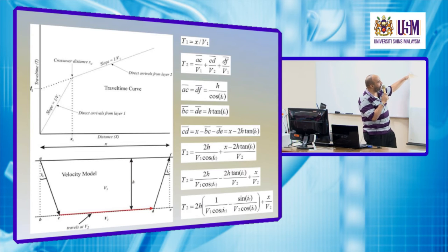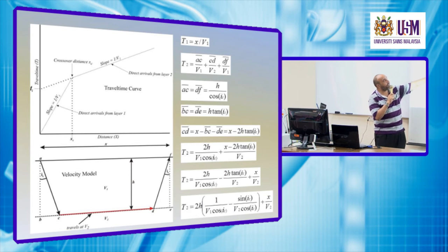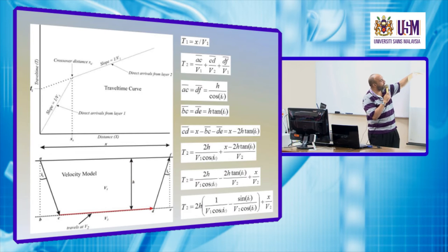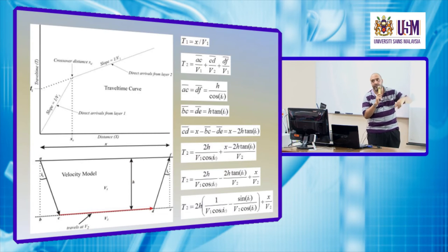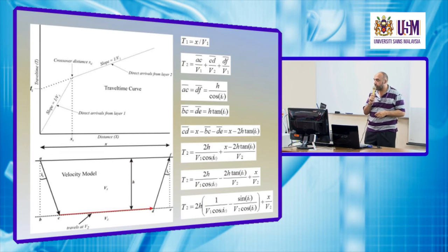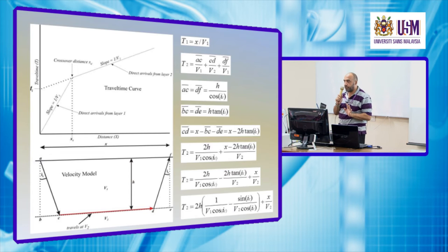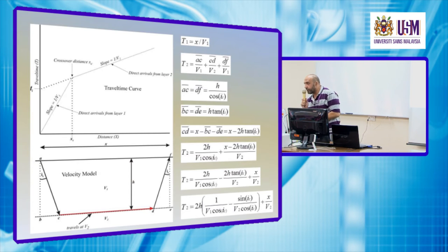In the case of direct waves, the travel time T1 is defined by x, the distance, divided by V1. Very simple.